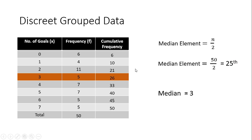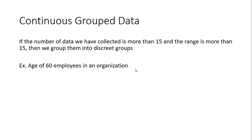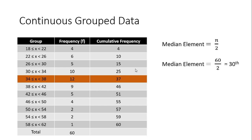Now we look at the continuous grouped data set — the ages of 60 employees in an organization. We have the group, the frequency, and the cumulative frequency column. The cumulative frequencies are 4, then 4 + 6 = 10, 10 + 5 = 15, 15 + 10 = 25, 25 + 12 = 37, and so on. Since n = 60, we take n / 2 = 30, and we need to find the 30th element.